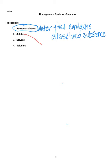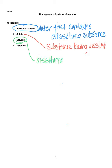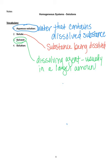When we look at a solute, that is the substance being dissolved. The solvent is going to be the dissolving agent, and usually it's in a larger amount as well. So we put the solute into the solvent, and out of that we are going to get the solution.